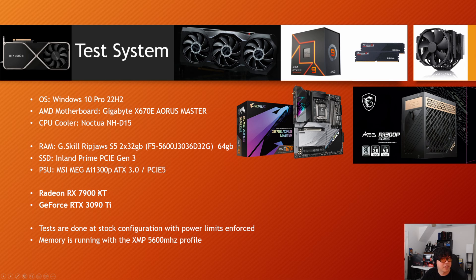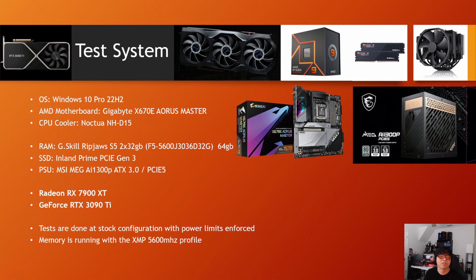The graphics cards tested are the RX 7900 XT — not the XTX — and the GeForce RTX 3090 Ti. These two GPUs are very similar in overall performance. Tests are done at stock configuration with stock power limits and memory running at the XMP profile, to give an out-of-box look at what results look like without any overclocking, undervolting, or manual tuning — just for people who want to game and know whether this feature is worth enabling.